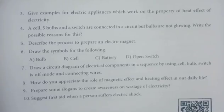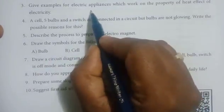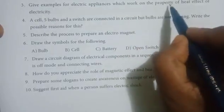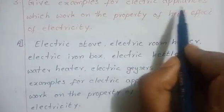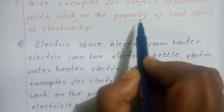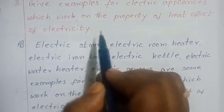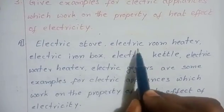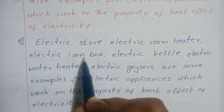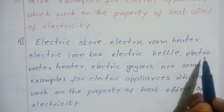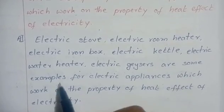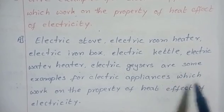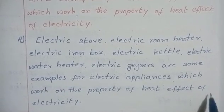Third question: Give examples of electric appliances which work on the heating effect of electricity. The answers are: electric stove, electric room heater, electric iron box, electric kettle, and electric water heater or geyser.